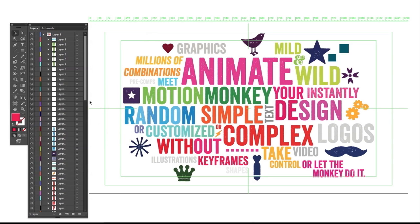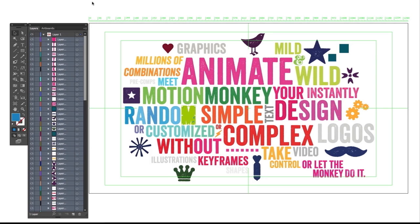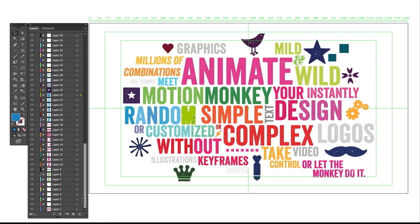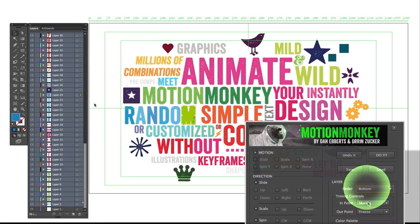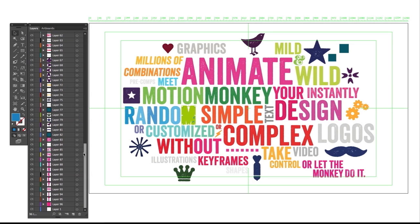Each layer should now be its own color. Once that's done, select all the layers and drag them to the top of the Layer menu. The last thing you need to do is select all the layers again and reverse the order. Make sure it's in the order that you want it to appear in. Technically, you can leave it backward and select Bottom from the Layer Order drop-down, but it might be easier to work this way.